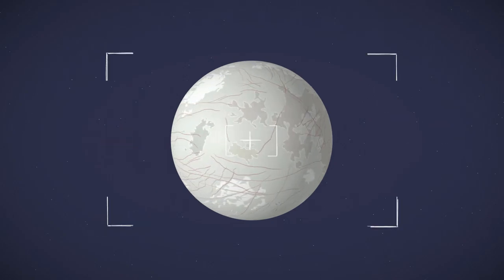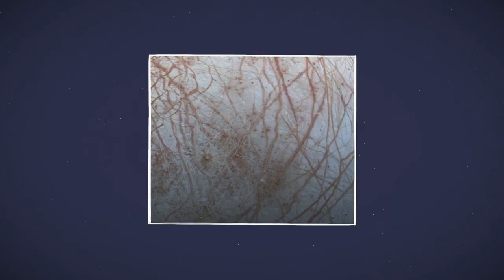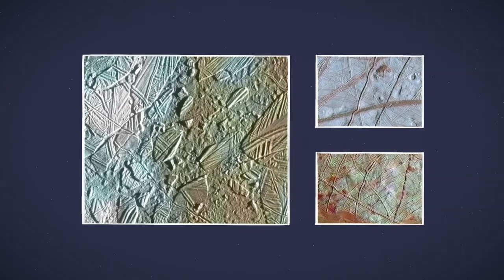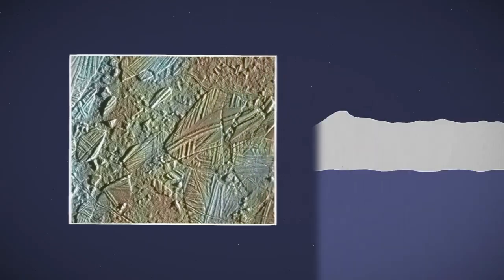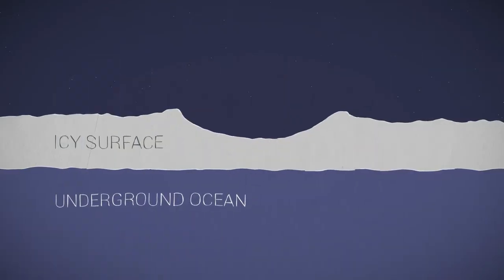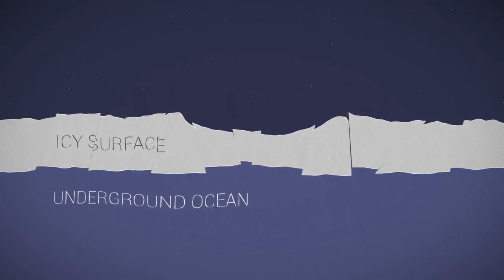Second, that surface is different than a lot of others in the solar system. We see lots of cracks and ridges, but not so many craters. It may be that an underground ocean causes the surface to warm and crack, changing the landscape and erasing craters.